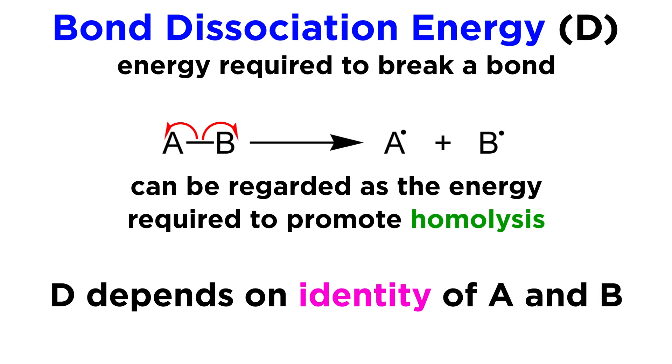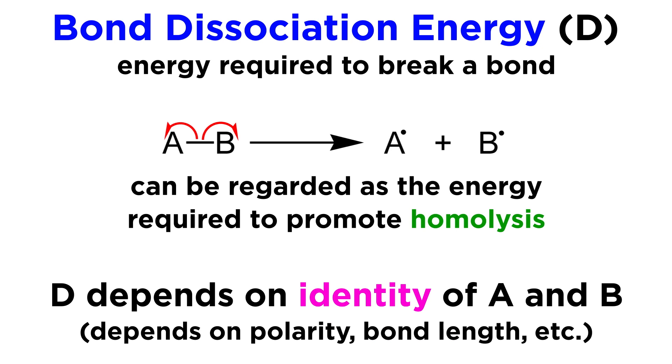Every bond will have a different bond dissociation energy, depending on the identity of the two atoms participating in the bond, since the polarity of the bond is a factor in determining its strength, as is the bond length.